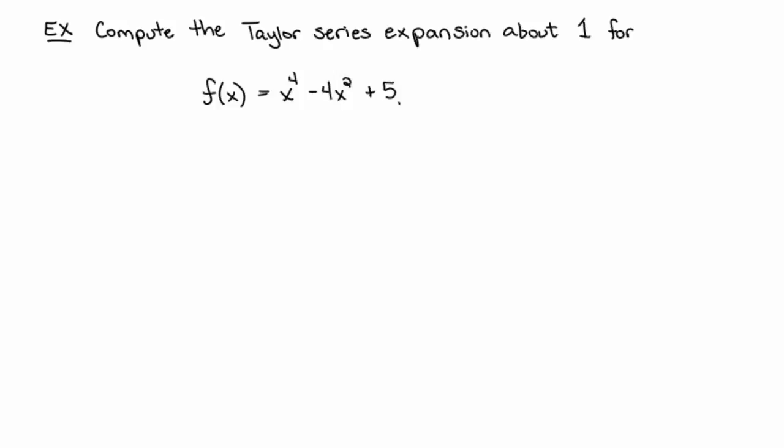So let's see, I know that the Taylor series expansion, assuming the Taylor series expansion exists, is going to equal the summation n equals zero to infinity, the nth derivative evaluated at one, because we're centering at one, over n factorial times x minus one, again because we're centering at one, to the nth power.